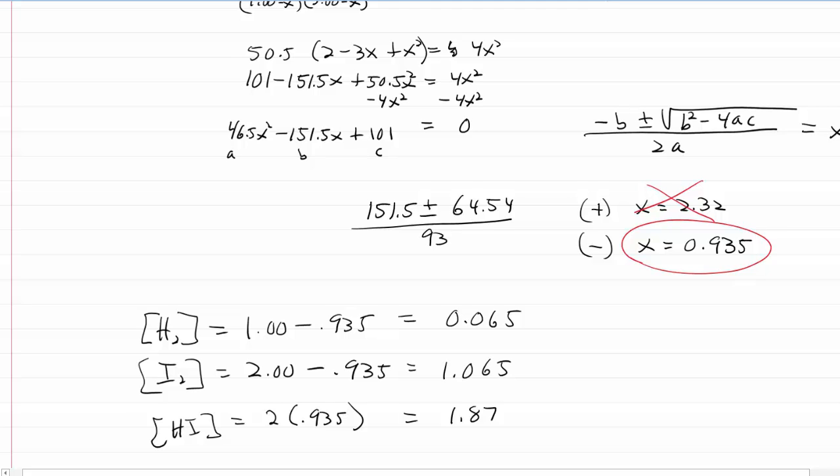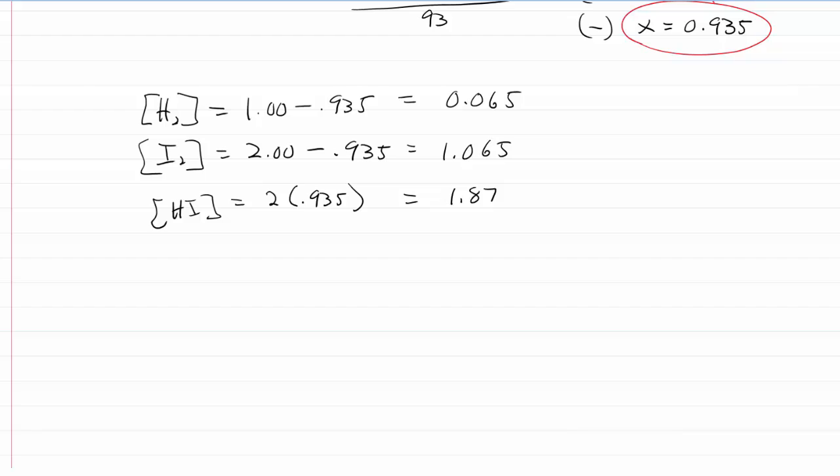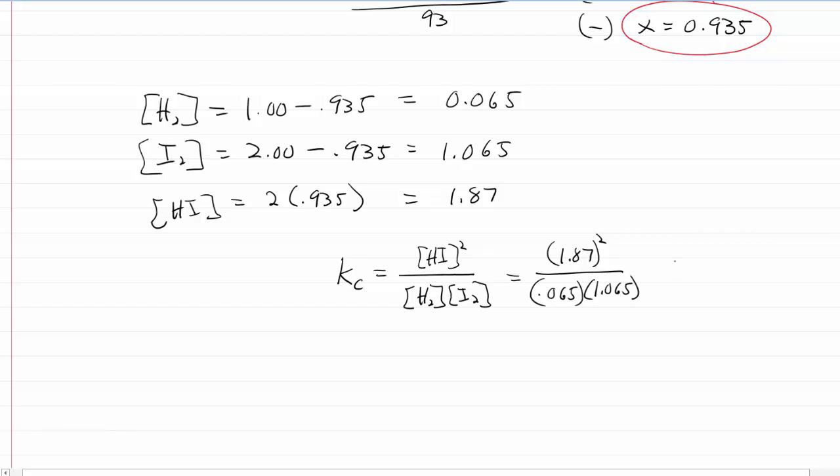Now the test for this is to plug it back into the equilibrium constant expression and see if we in fact get 50.5. So remember again, Kc equals the HI squared over H2 and I2. And so this is 1.87 squared divided by .065 times 1.065, and voila, we get 50.5 back. So there you go, an actual math calculation that is useful in a chemistry class.